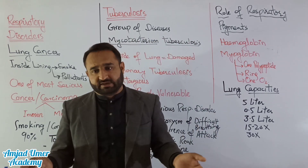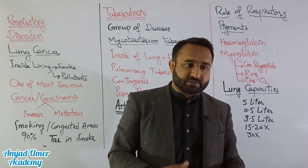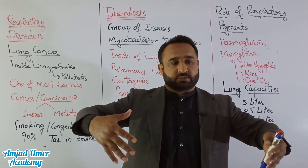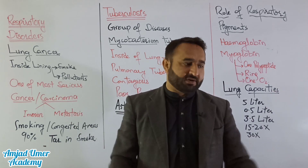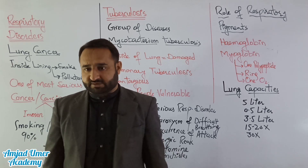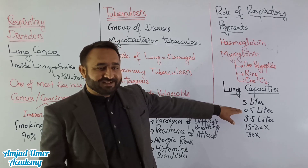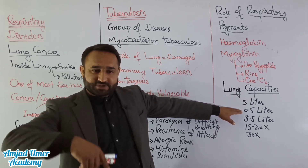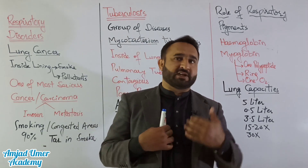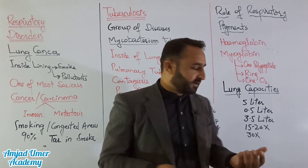Now, lung capacities. In an adult human, when the lungs are fully inflated, they hold five liters of air. When we are at rest, only half a liter of air is exchanged — half a liter goes out and half a liter comes in — while the remaining 4.5 liters stays in the lungs.